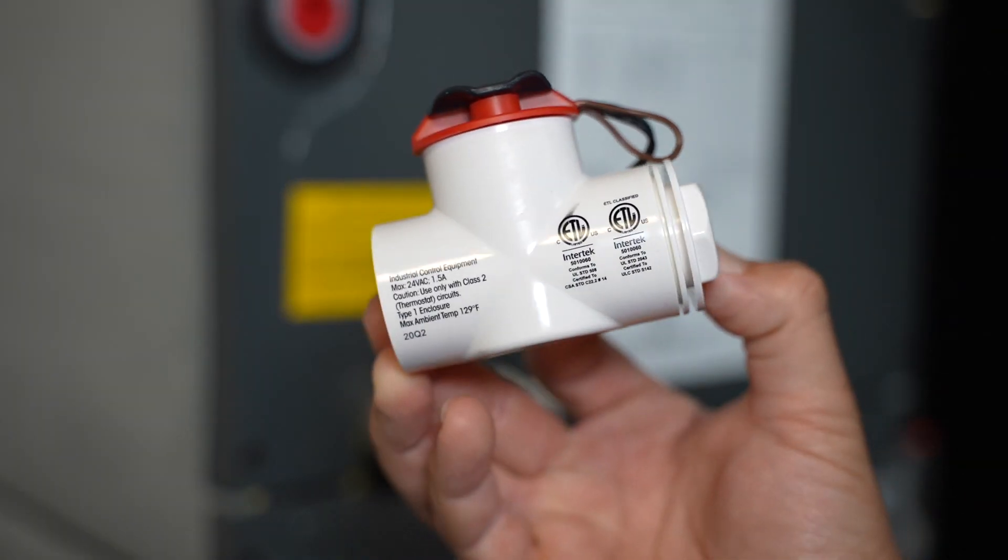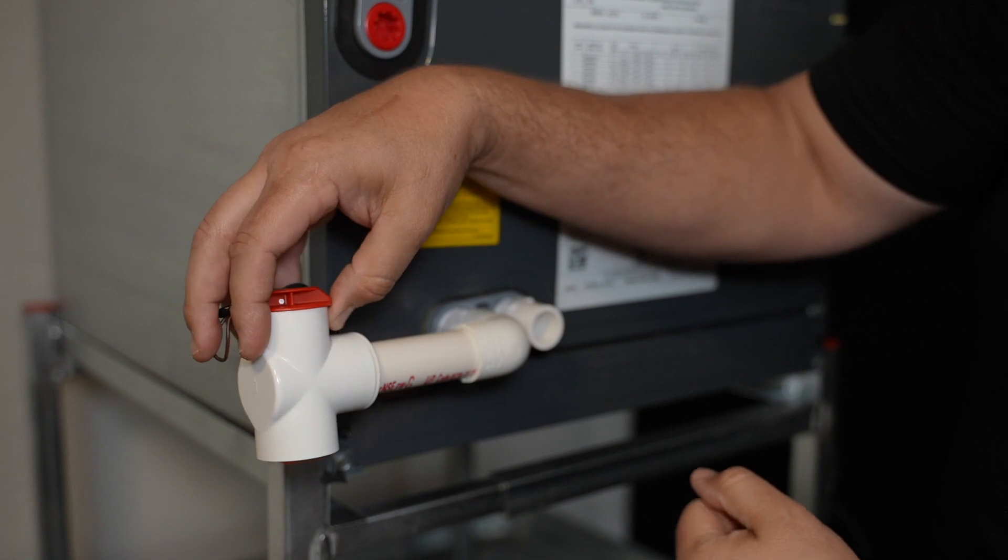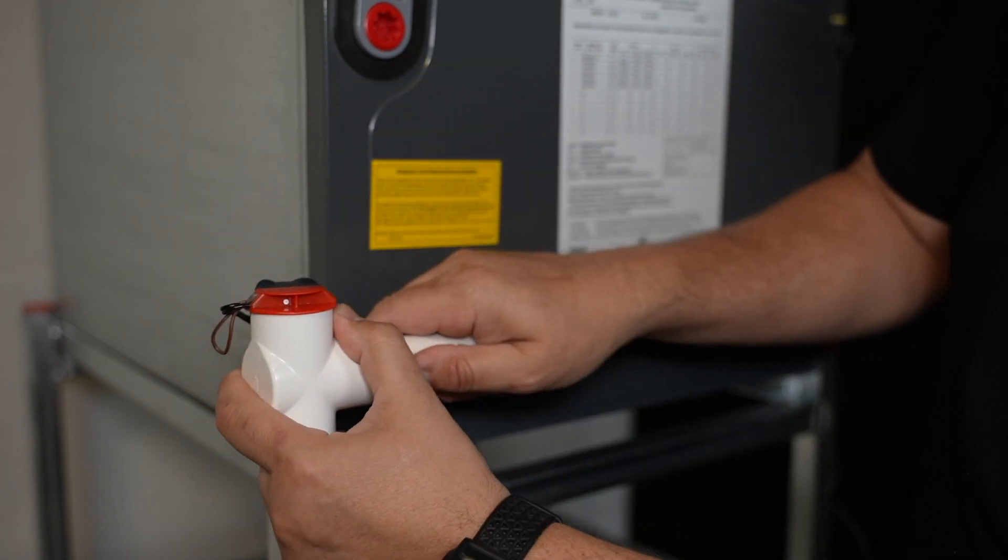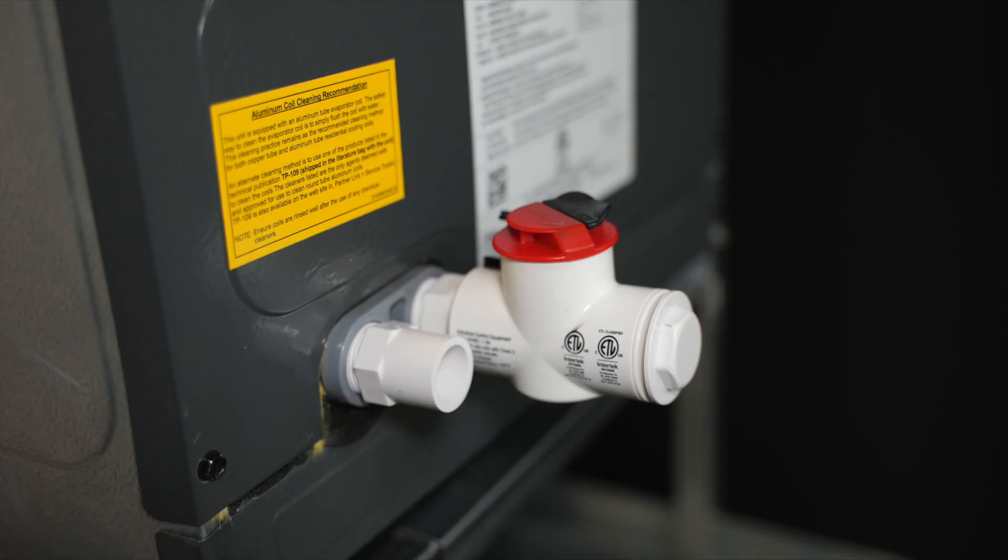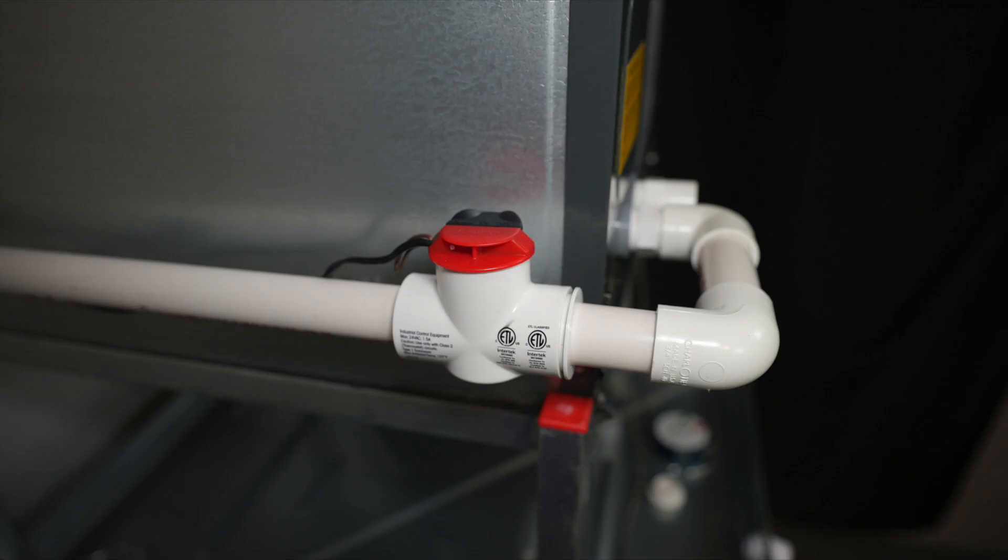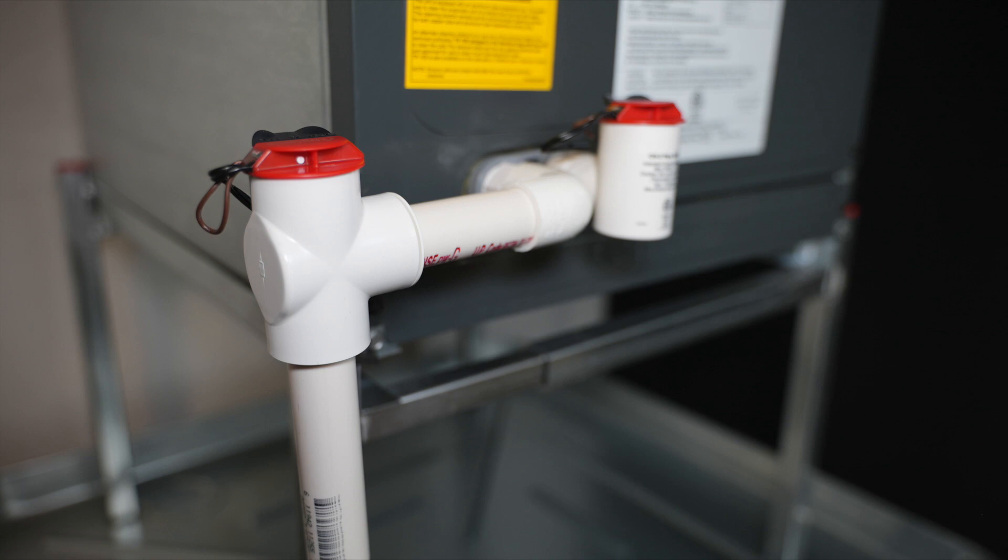The CS1 condensate overflow switch is a versatile option for primary or secondary drain line applications. It has three install configurations: primary pan secondary port, primary pan main port in the horizontal drain line, and primary pan main port in the vertical drain line.